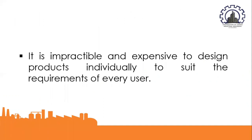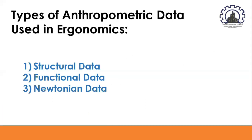It is impractical and expensive to design products individually to suit every user because most products are mass-produced and designed to fit a wide range of users. The bespoke tailor, the dressmaker, and the cobbler are perhaps the only remaining examples of truly user-oriented designers in Western industrialized societies. There are three types of anthropometric data used in ergonomics: structural data, functional data, and Newtonian data.